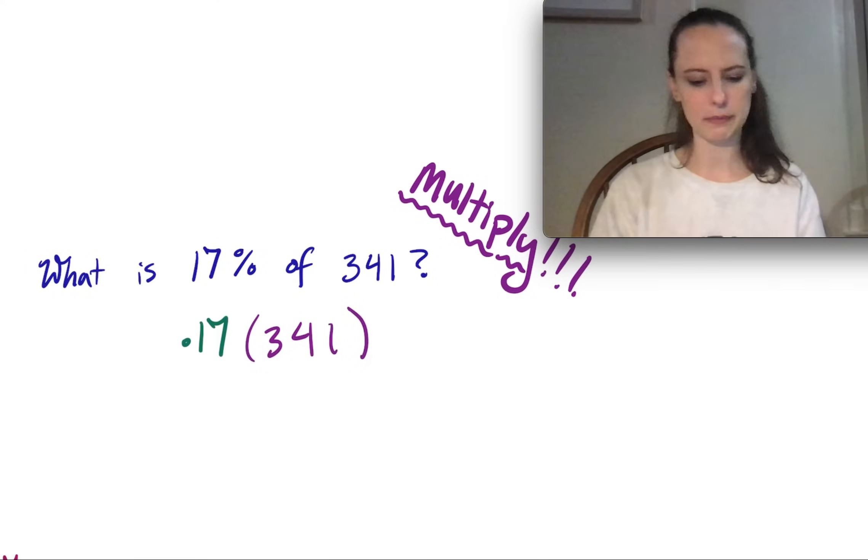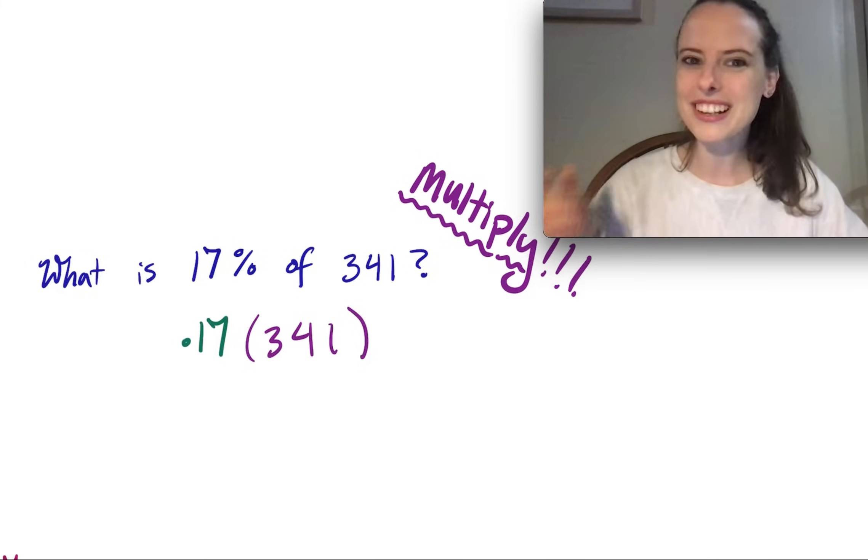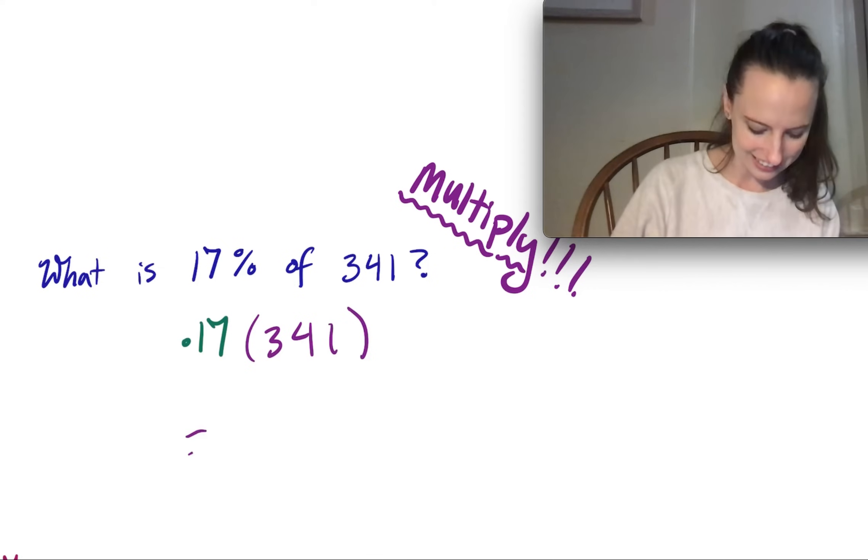So if we pull out a calculator, we can multiply that out. .17 times 341 equals 57.97, and that's our answer.